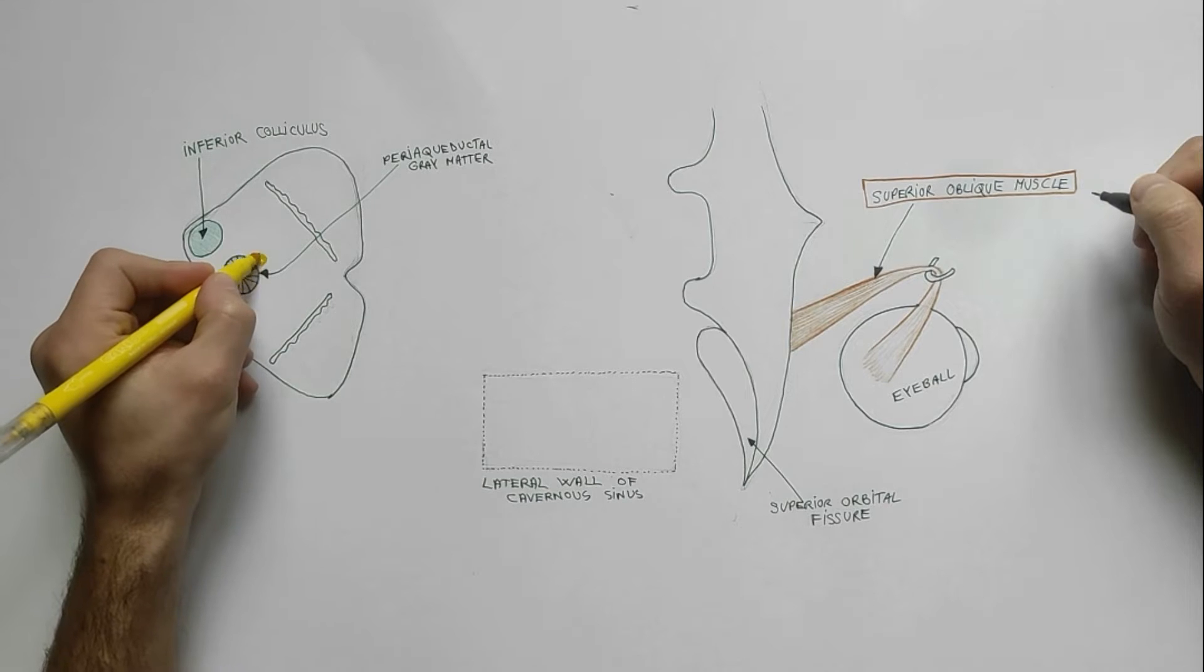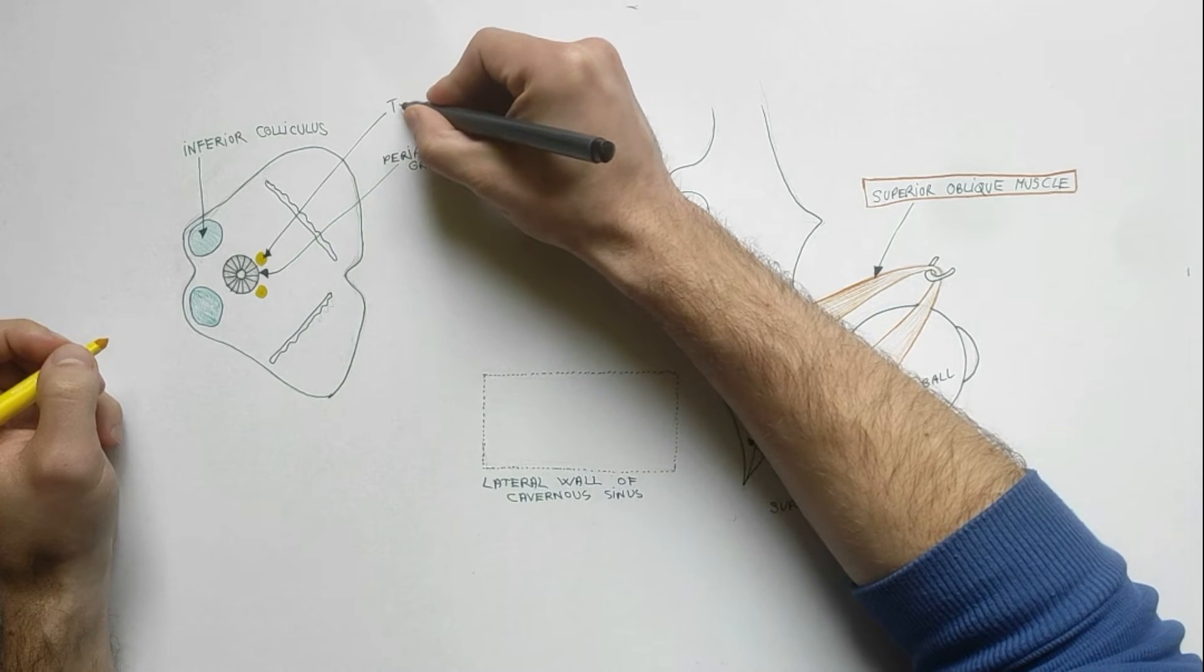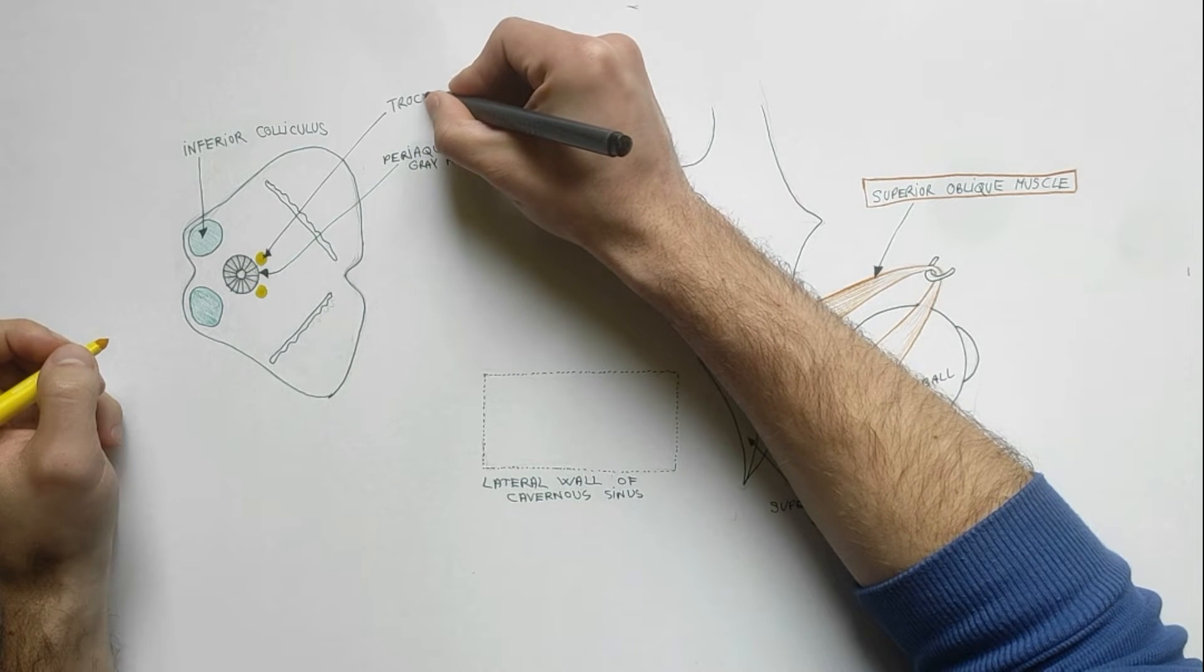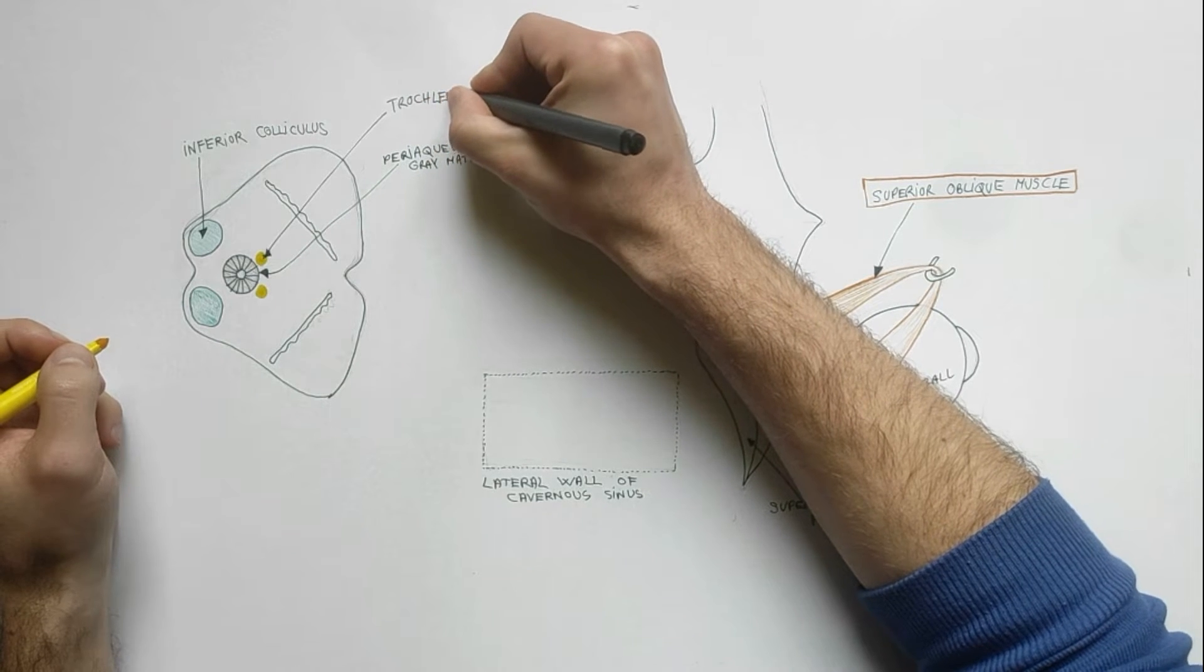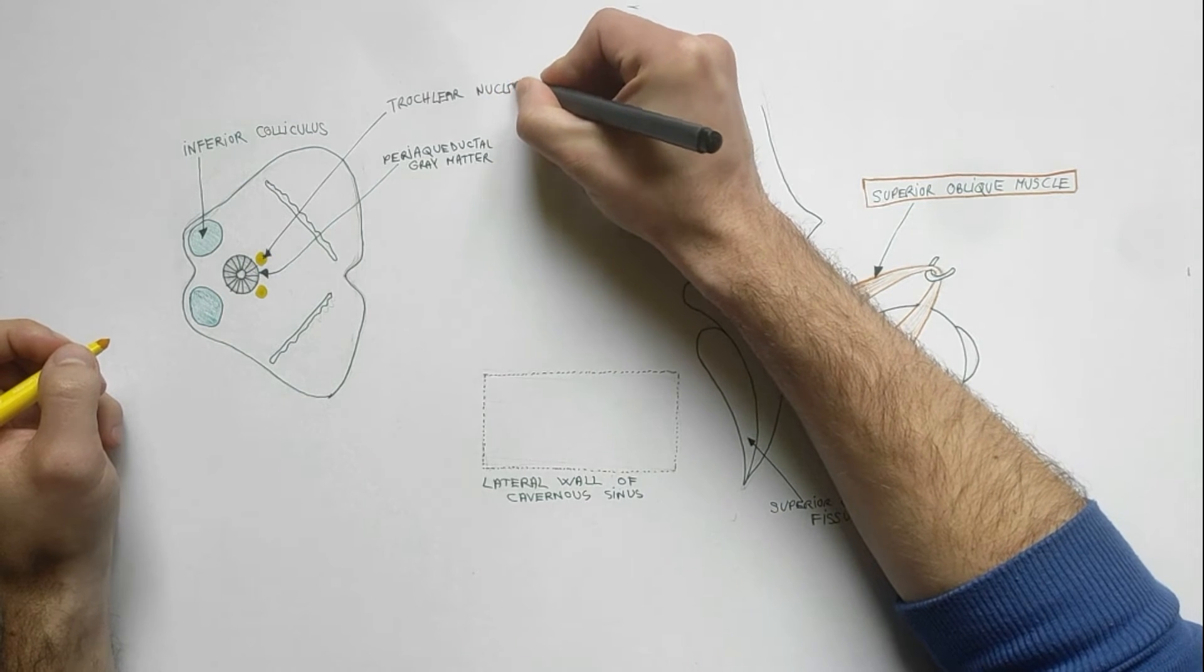The axons of the trochlear nerve originate in the trochlear nucleus, located in the tegmentum of the midbrain at the level of the inferior colliculus, and ventrolateral to the periaqueductal grey matter.